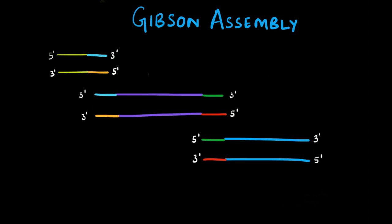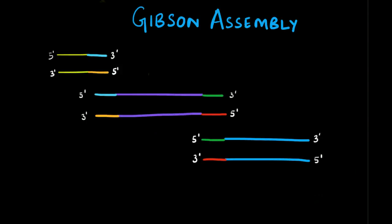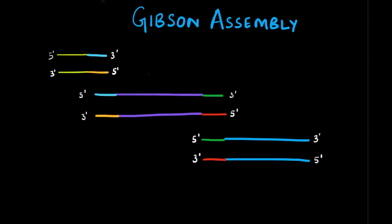Briefly, the Gibson assembly is a DNA assembly method which allows for the joining of multiple DNA fragments in a single isothermal reaction, resulting in a single double-stranded DNA molecule as seen here.